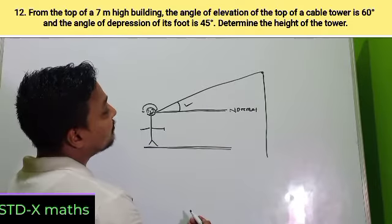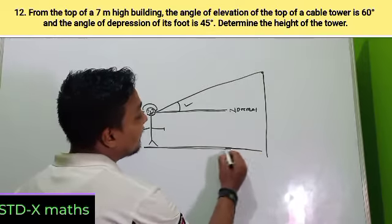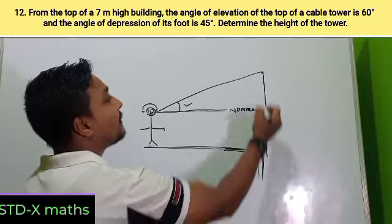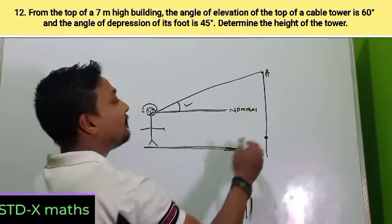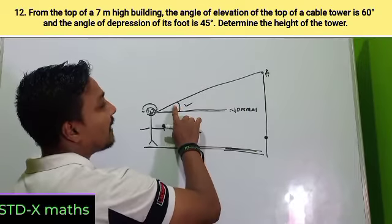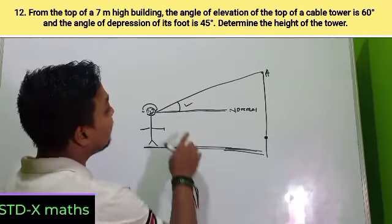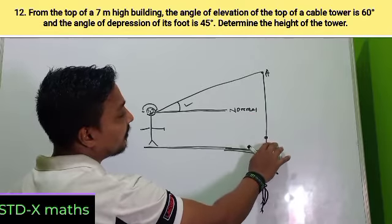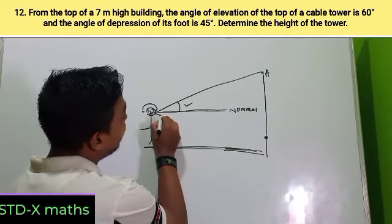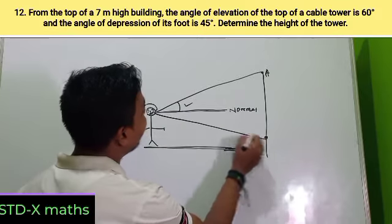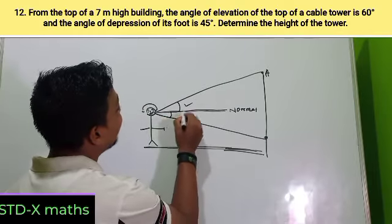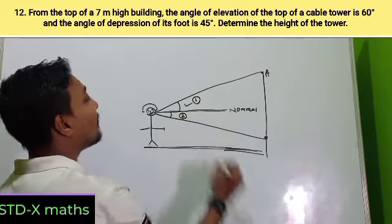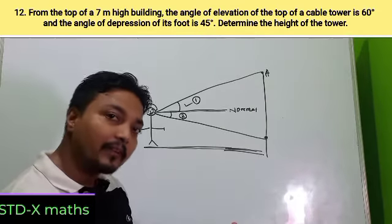Whenever any object is lower than the normal, the angle formed with the normal is called the angle of depression. So: object above normal → angle of elevation; object below normal → angle of depression.